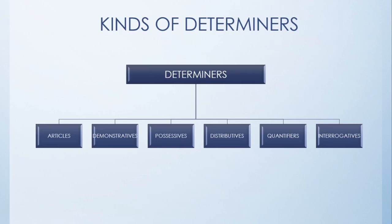Articles we all know: a, an, and the. This, that, these, those are demonstratives. My, his, your, her, etc. are possessives. Either, neither, each, every are distributives.